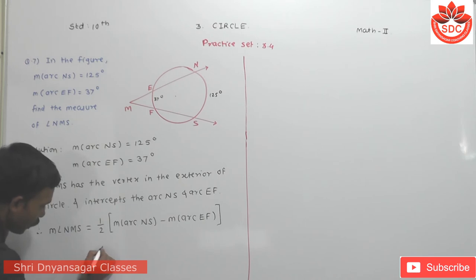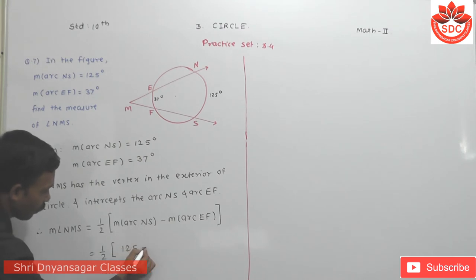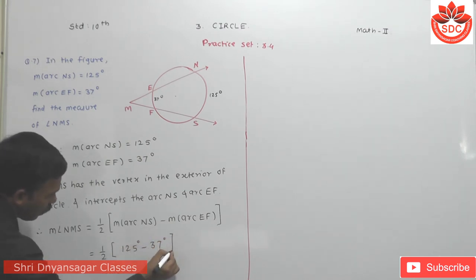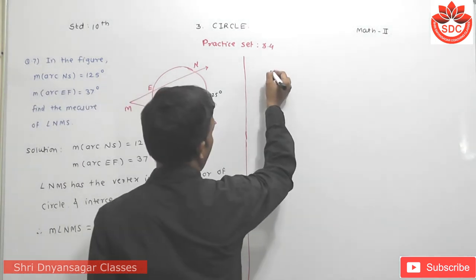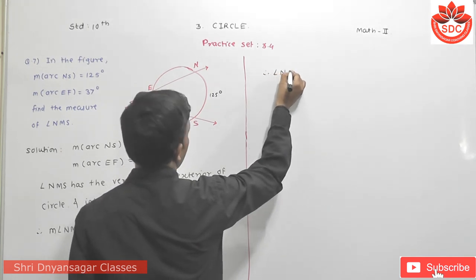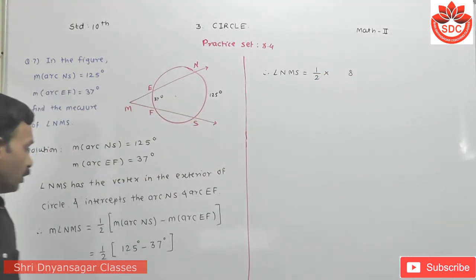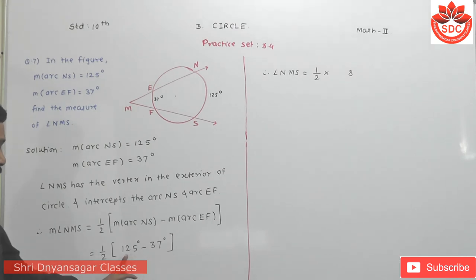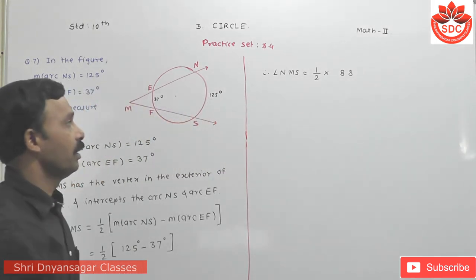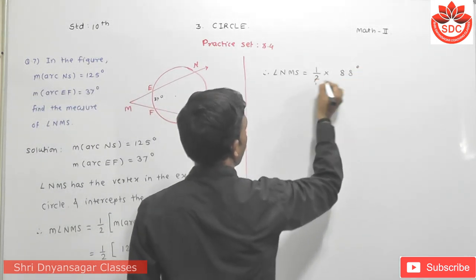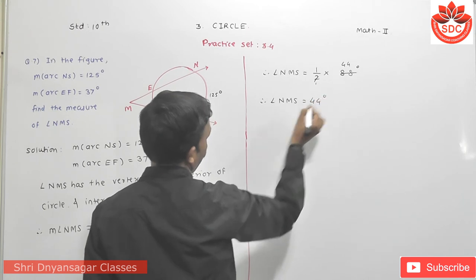Substituting the values: angle NMS equals one half of (125 minus 37) degrees. The subtraction gives 88 degrees. So angle NMS equals one half times 88, which equals 44 degrees.